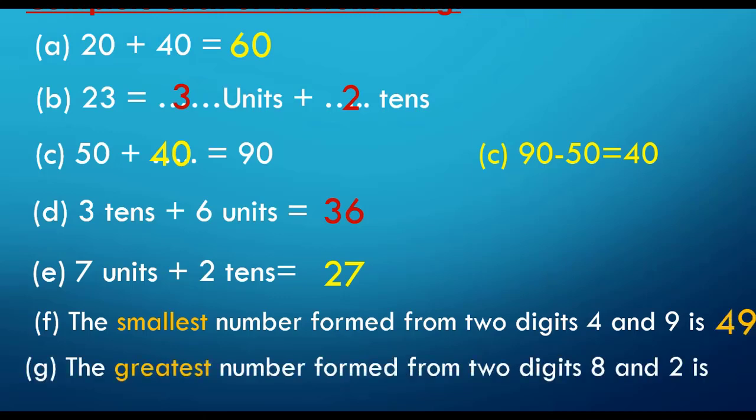The greatest number formed from two digits, eight and two. Here it says 'greatest,' not 'smallest.' Greatest means الأكبر. I put the larger digit in the tens place and the smaller in units. The larger of 8 and 2 is 8, so 8 goes in tens and 2 goes in units. The number is 82.